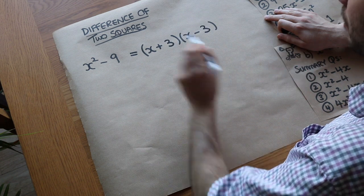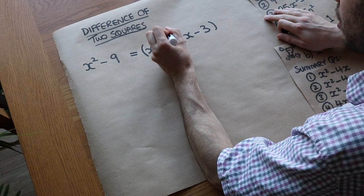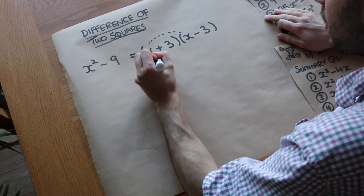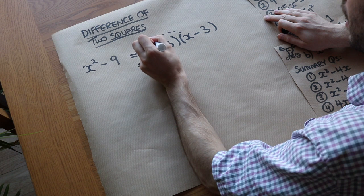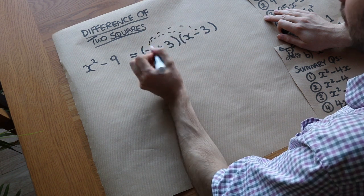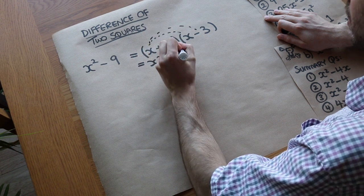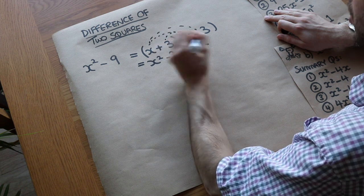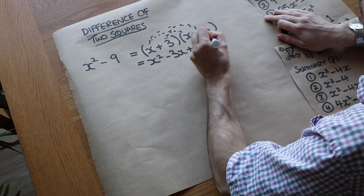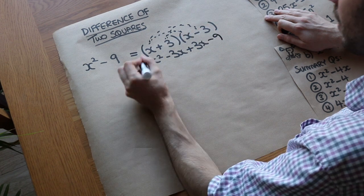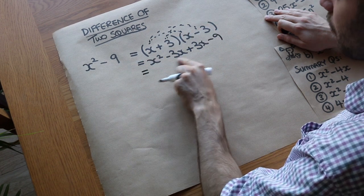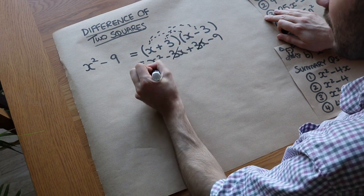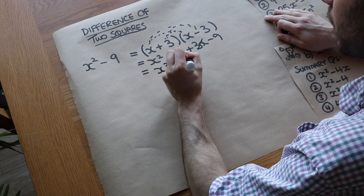Let's check this works by expanding. x times x is x squared. x times minus 3 is minus 3x. 3 times x is plus 3x. And 3 times minus 3 is minus 9. Collecting like terms, minus 3x and plus 3x cancel, leaving just x squared minus 9. So it did work.